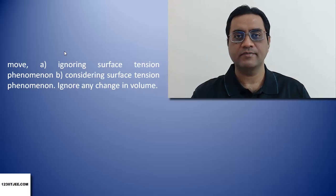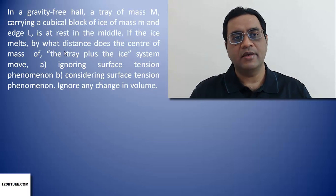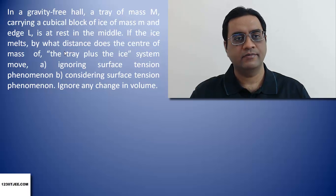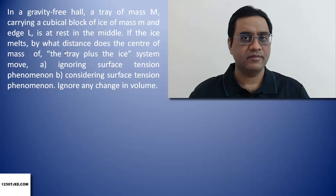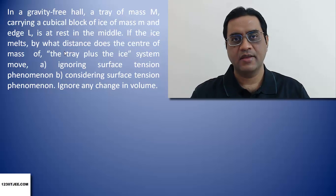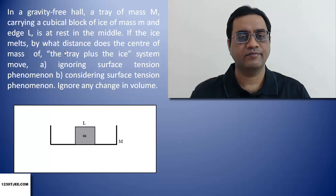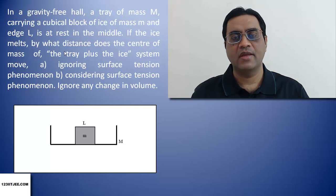The problem is, in a gravity-free hall, a tray of mass M carrying a cubical block of ice of mass m and edge L is at rest in the middle. Here is the figure. If the ice melts, by what distance does the center of mass of the tray plus the ice system move?